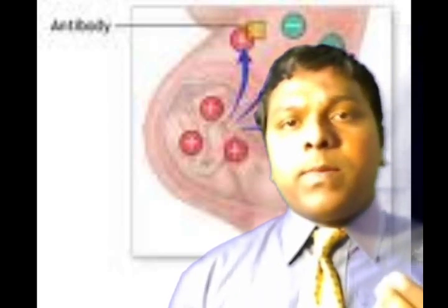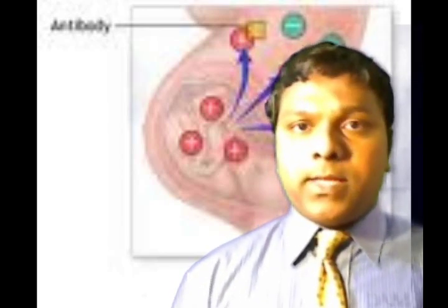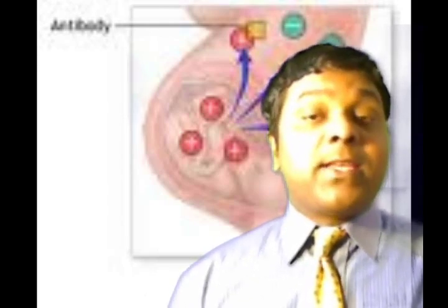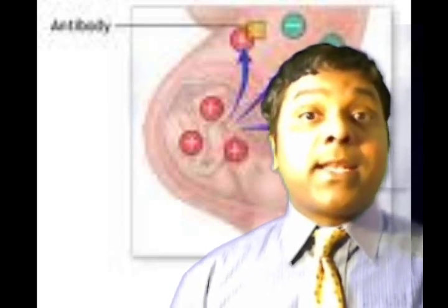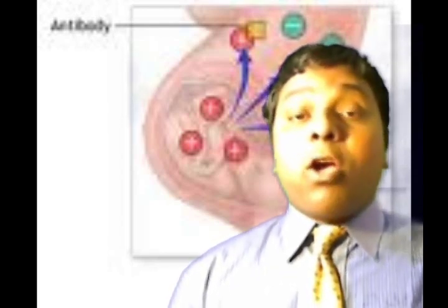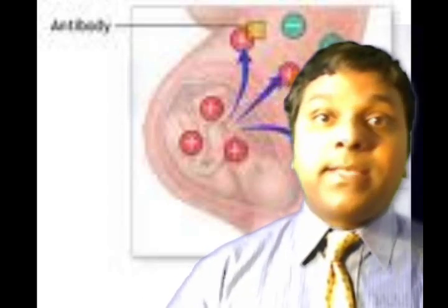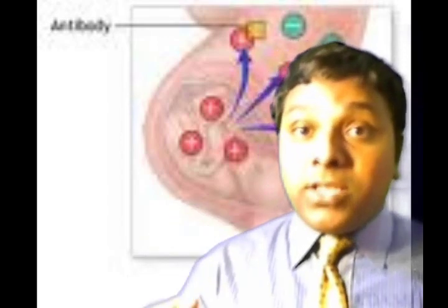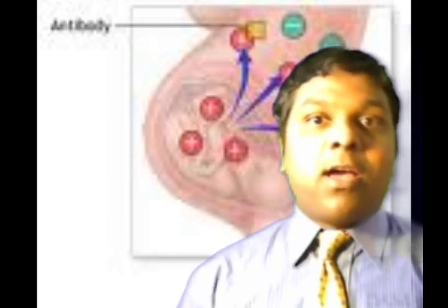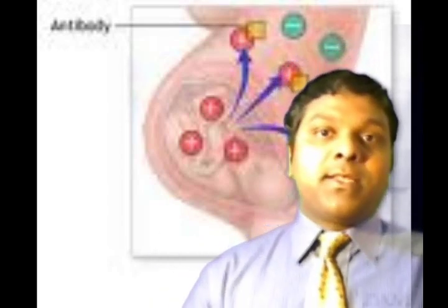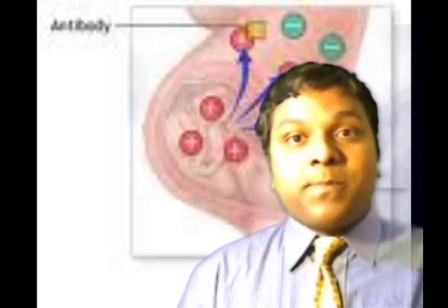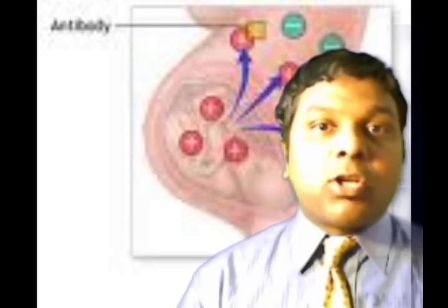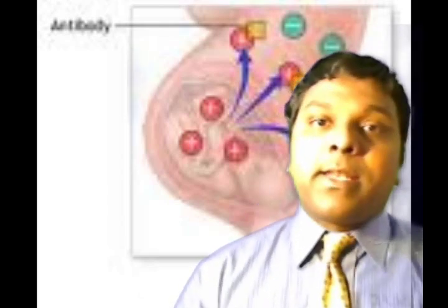The first maternal immune response to RH sensitization is low levels of immunoglobulin IgM. Within six weeks to six months, IgG antibodies become detectable. In contrast to IgM, IgG is capable of crossing the placenta — IgM does not cross. When IgG antibodies cross the placenta, they destroy the fetal red blood cells, causing hemolysis.